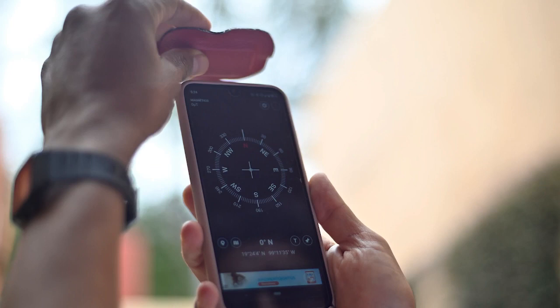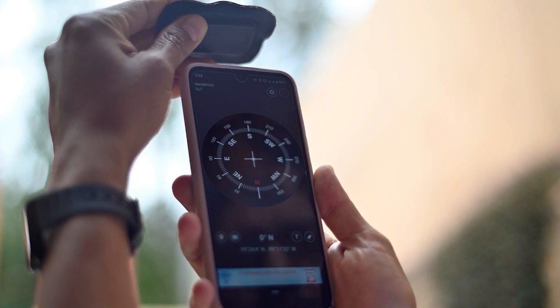If the north of the compass points towards the magnet, that indicates that this is the south pole of the magnet, in red. If you rotate the magnet 180 degrees, you will see that the arrow on the screen also rotates to the other side.